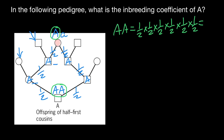The probability for genotype capital A capital A is one half multiplied six times — that's one over 64 — which is the probability that he is going to have two identical dominant alleles inherited from the common ancestor at locus A.